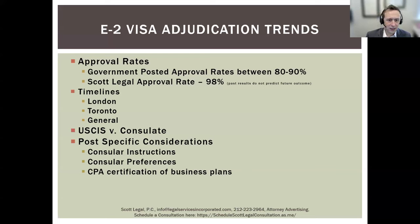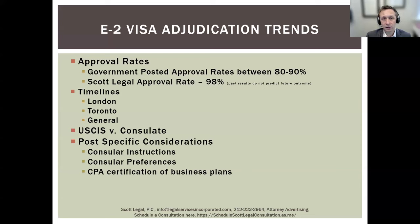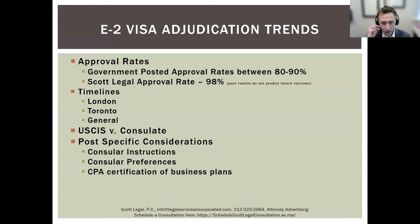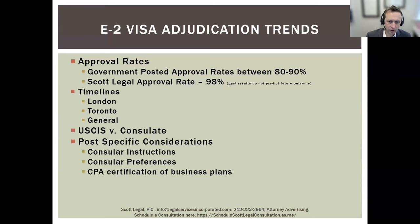Each consulate has its own instructions for E2 applications and its own preferences — some see very large companies, some see smaller ones, some have their own E-visa units and some don't. You don't necessarily have to apply at a consulate in an E2 treaty country. For example, many Brazilians have second citizenship in Italy or Germany, and since Brazil is not an E2 treaty country but Italy and Germany are, we file E2 applications in Brazil with some regularity. Be strategic about where the application is filed. Certain consulates also require a CPA certification on business plans — Singapore comes to mind.